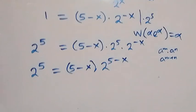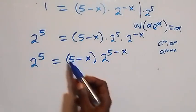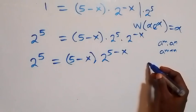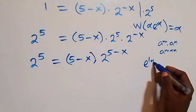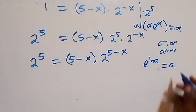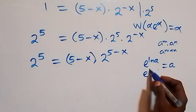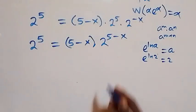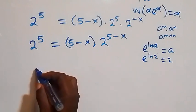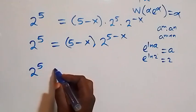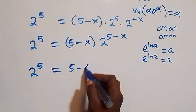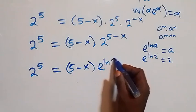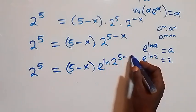From here, we have 5 minus x on both sides. Now let's rewrite 2 using the identity that e raised to power ln of a equals a, so e raised to power ln 2 equals 2. We rewrite this as e raised to power ln 2, so 2 raised to power 5 becomes e raised to power ln 2, all raised to power 5.